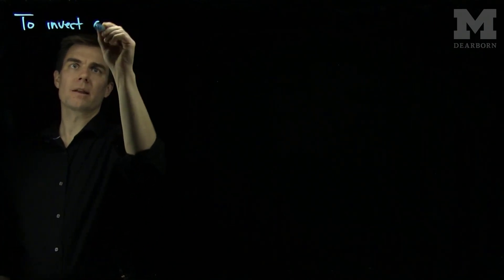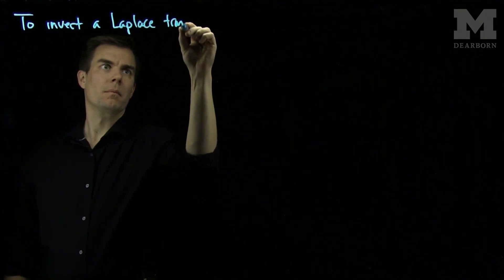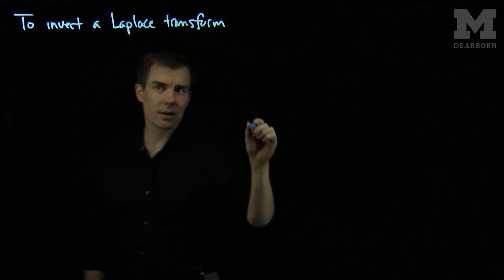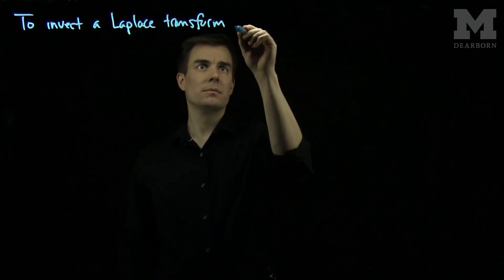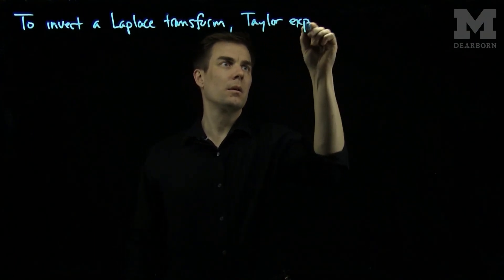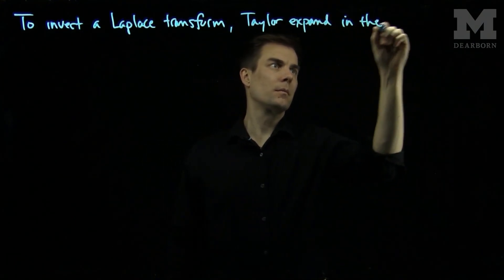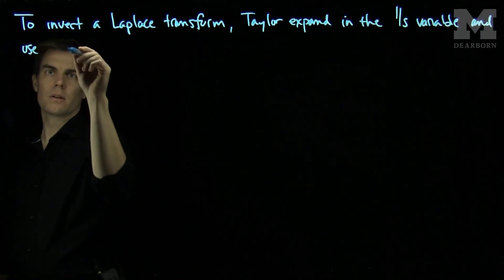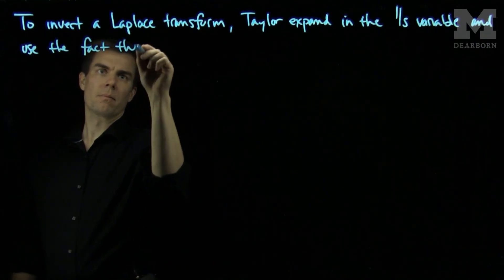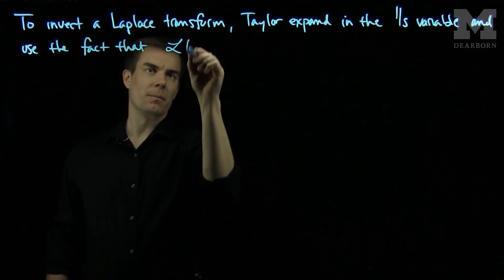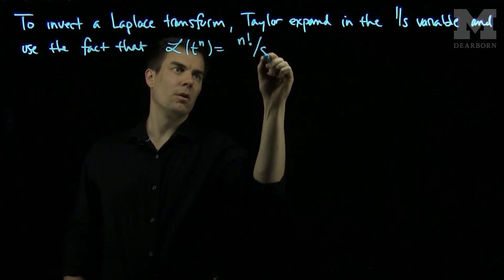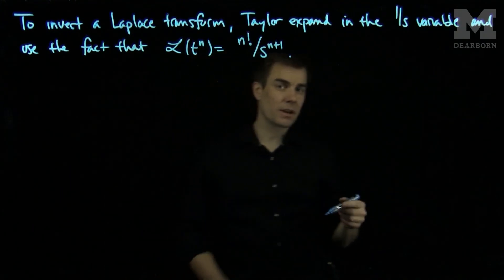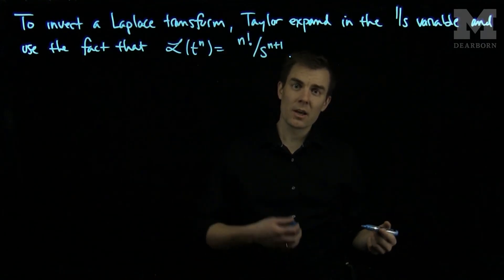Hello students. In this video we'll see how to invert Laplace transforms by the power series method. To invert a Laplace transform, Taylor expand the function with respect to 1 over s, and use the fact that the Laplace transform of t to the n is n factorial over s to the n plus 1. Let's see an example of a complicated function that can be inverted using this technique that doesn't appear in standard tables.